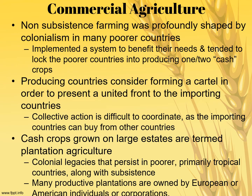Non-subsistence farming was profoundly shaped by colonialism in many poor countries. The Atlantic slave trade was really all about commercial agriculture — slaves were mainly brought to the Americas as commercial agricultural laborers on plantations. This implemented a system that tended to lock poor countries into producing one or two cash crops, which today is a big part of what we call neocolonialism. We use many less developed countries to produce foods that we want in developed countries — like coffee in South America and Africa, and cocoa for chocolate in those same places. Cash crops grown on large estates are termed plantation agriculture, and this is part of the ongoing colonial legacy.